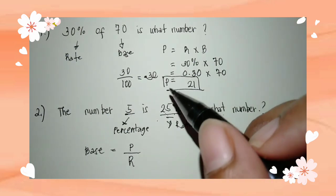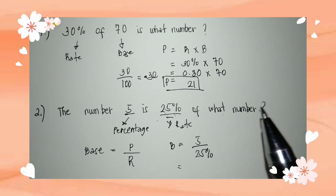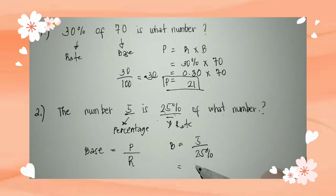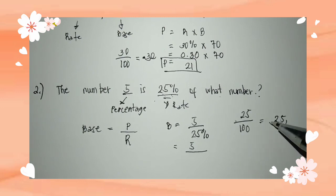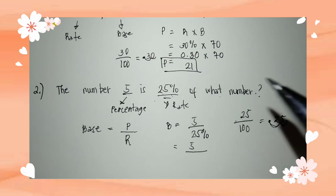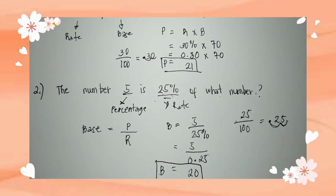So B equals percentage over rate: our percentage is 5 over rate 25 percent. Remember to always divide 25 percent by 100 first. Move the decimal two places: 25 divided by 100 equals 0.25. Then 5 divided by 0.25 equals 20. So the base is 20 — meaning 5 is 25 percent of 20.